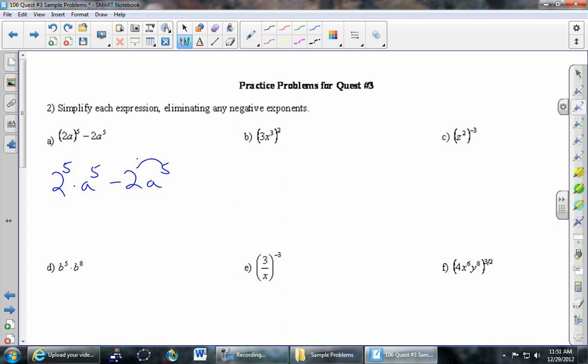Notice that this five doesn't come over here to the two. There's no parentheses. So we just copy 2A to the fifth. And then 2 to the fifth is 32. 32A to the fifth minus 2A to the fifth. And then these are like terms. 32 of some things minus 2 of the same things gives me 30 of those things. So 30A to the fifth is our final answer.